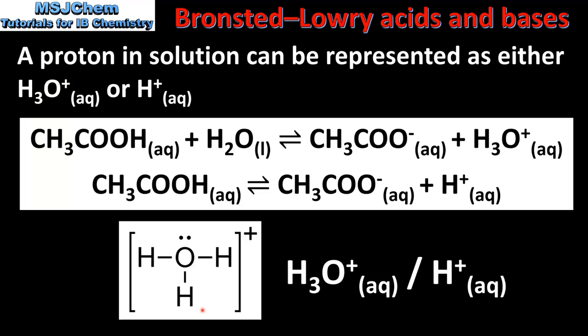Here we can see the Lewis structure of the hydronium ion. The hydronium ion is formed when the oxygen atom in a water molecule uses its lone pair of electrons to bond with a hydrogen ion. This can be represented in solution as H3O+, or simply H+.